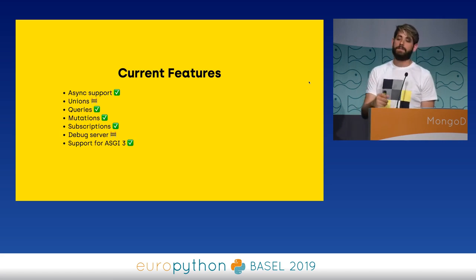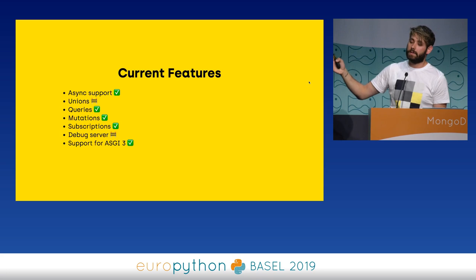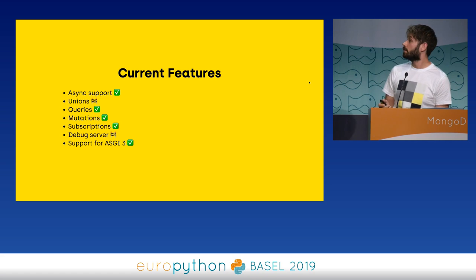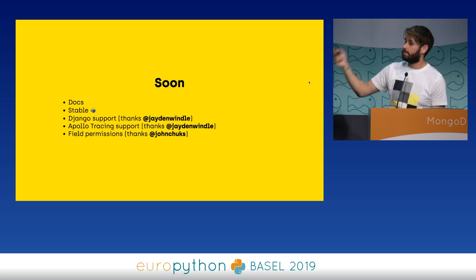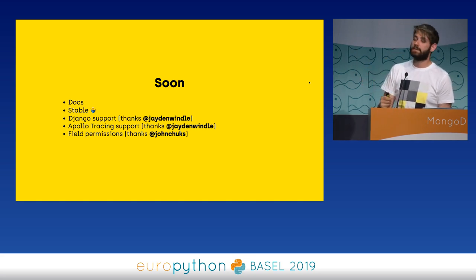ASGI is an asynchronous implementation of WSGI — it basically works with async. ASGI3 compatibility means it works with any ASGI server, so you can use Starlette, Responder, and so on. Soon I'm working on the docs — I got a bit stuck with the design because I like things that look nice. Then I want to make it stable. I'm hoping to use it for the Python Italia website, which gives me a production project to test against.